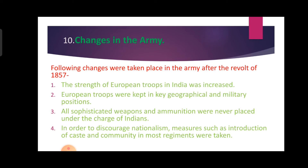The tenth result is changes in the army. Following changes took place after the revolt of 1857: first, the strength of European troops in India was increased; second, European troops were kept in key geographical and military positions; third, all sophisticated weapons and ammunition were never placed under the charge of Indians; fourth, in order to discourage nationalism, measures such as introduction of caste and community in most regiments were taken.